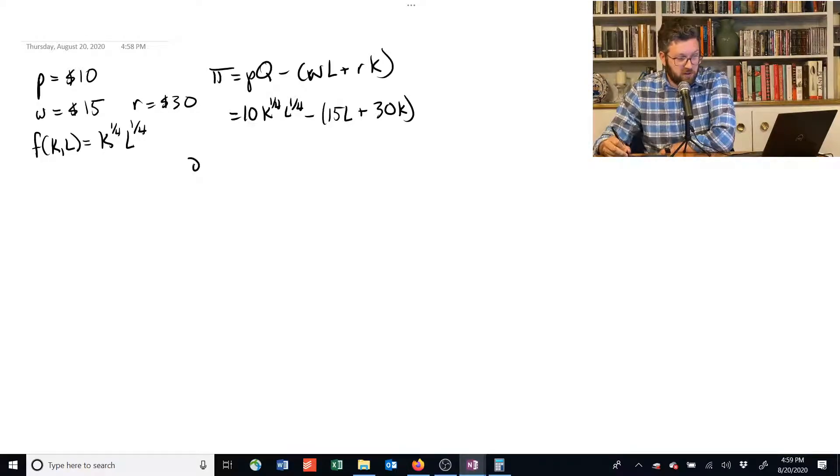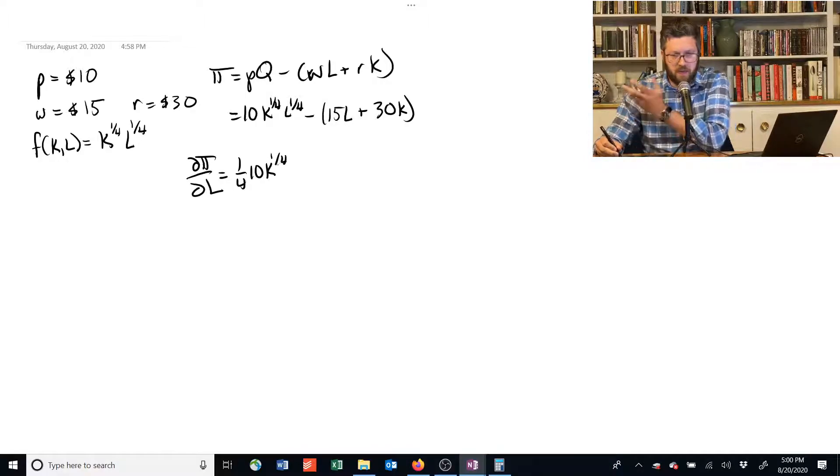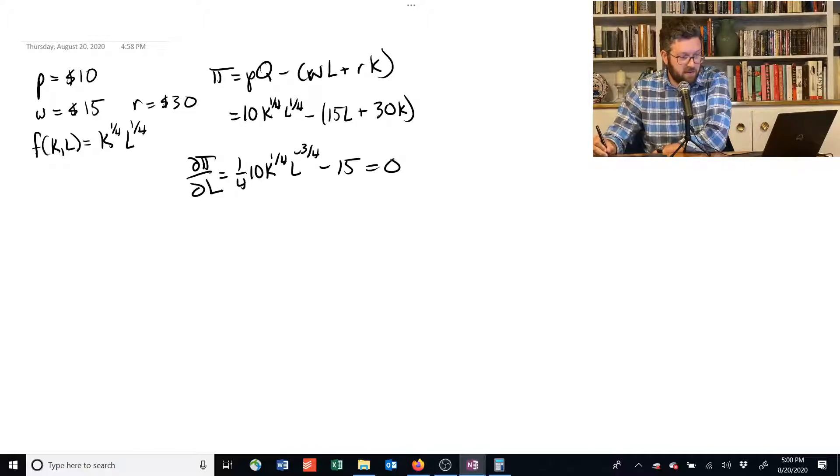So now we need to find our two first-order conditions. First, we take the one with respect to labor. We've got to take the partial derivative of this guy with respect to labor. So we bring the 1/4 down. We have 10 times K to the 1/4. We leave those guys alone. The K we just treat like a number when we're taking a partial derivative. And we subtract 1 from the exponent, minus 15, set that equal to 0. 15 times L, the derivative of that is just 15. Notice this is the same as last time, except we have this K to the 1/4 out in front. We couldn't get rid of it like we did last time.